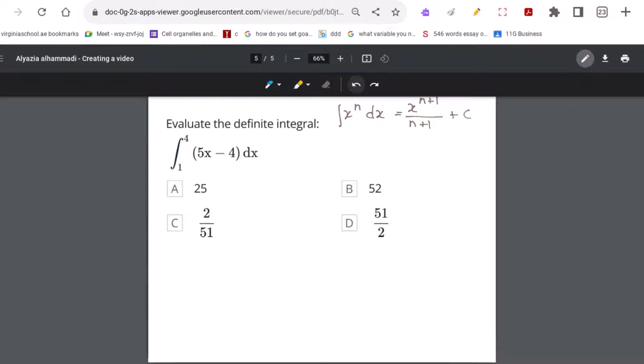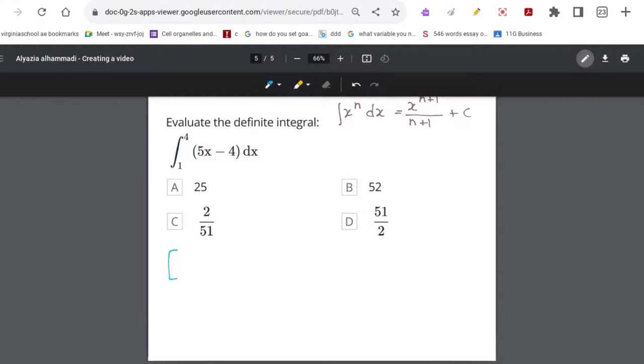Now we will apply this rule to our definite integral by excluding the C. We will open a bracket and write down 5x to the power of 2 over 2 minus 4x, from x equals 1 to x equals 4.